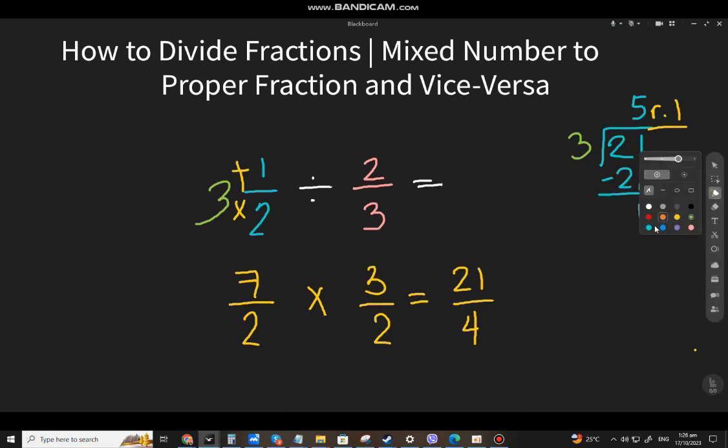The quotient will be 5. And the remainder, that will be the numerator. And the divisor, that will be the denominator. And for the question 3 and a half divided by 2⁄3, that will be 5 and 1⁄3.